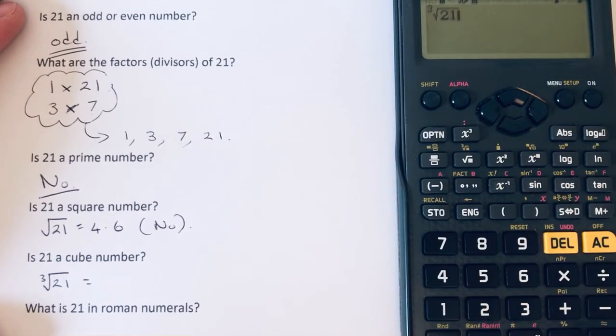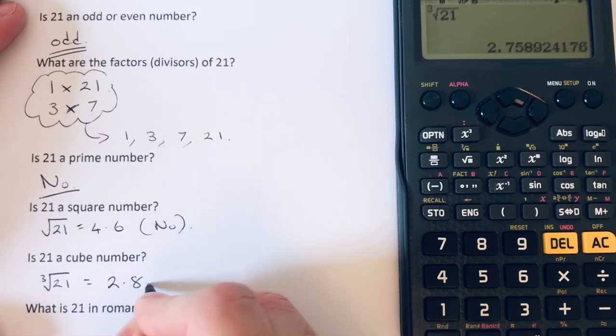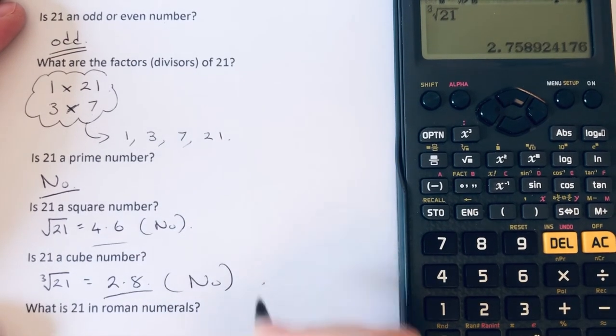The cube root of 21 is 2.8. So again, the answer is no because it's not a whole number.